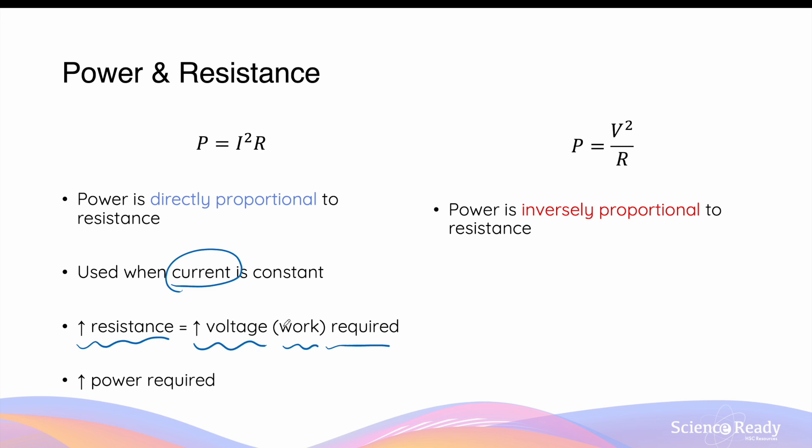Since we are doing more work and require more energy to produce the same amount of current, that's why we have an increased power when we have an increased resistance. So power is proportional to resistance.